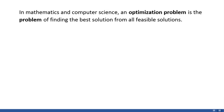In mathematics and computer science, an optimization problem is the problem of finding the best solution from all feasible solutions. This is a rather technical-sounding definition provided to us by Wikipedia. What's important to hone in on here is the word 'best.' What we're really doing in an optimization problem is we're trying to minimize or maximize an equation depending on our desired goal.